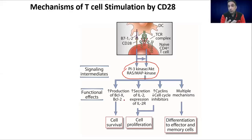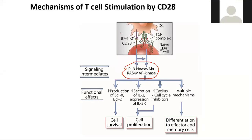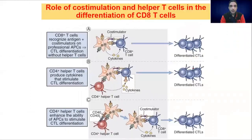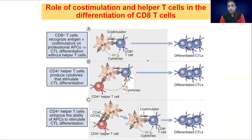It helps the cells to express new types of genes so the phenotype of the cell changes. The cell not only divides but also changes its structure — this is called differentiation. The cell is not only dividing but also acquiring new features and becoming different from the parent cells. So T-cells under these conditions are getting proliferated.